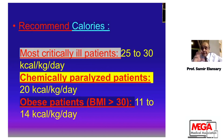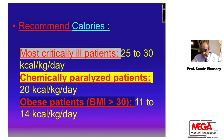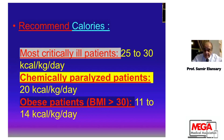Recommended calorie guidelines in the ICU: most critically ill patients in weeks one and two — 25 to 30 kcal per kg per day. Paralyzed and resting patients — 20 kcal per kg per day. Obese patients with BMI over 30 — 11 to 14 kcal per kg per day actual body weight, but increase protein in these situations.